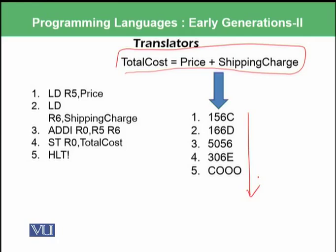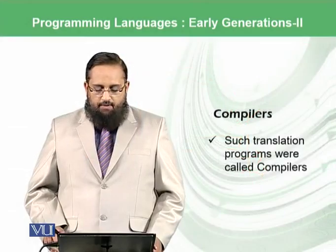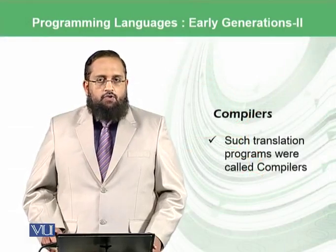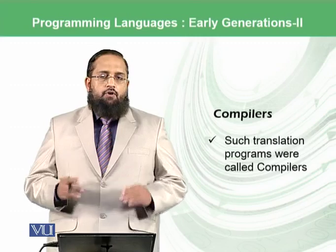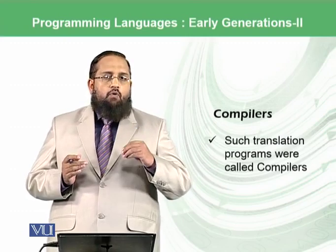The translator understands that the user wants to add something, so it generates the add instruction. It loads the price and the shipping charge, stores the result back into RAM, and then adds the halt instruction. Such translators were built in the third generation of programming languages, and they were called compilers.